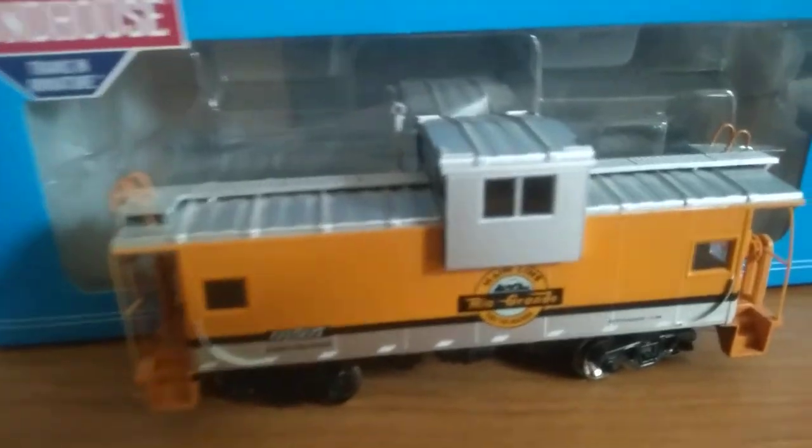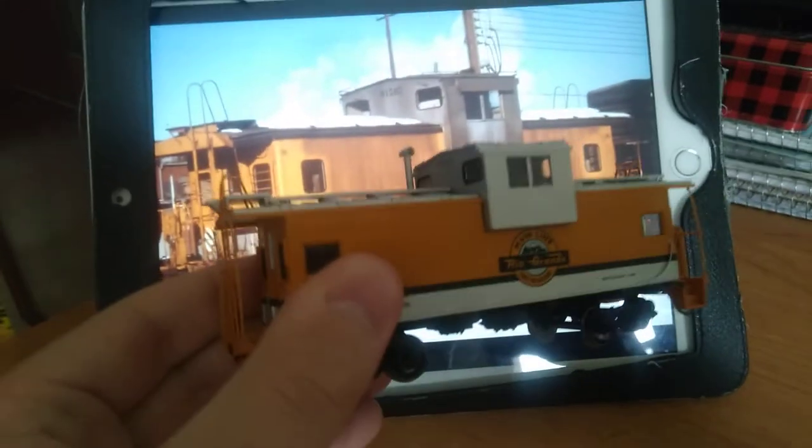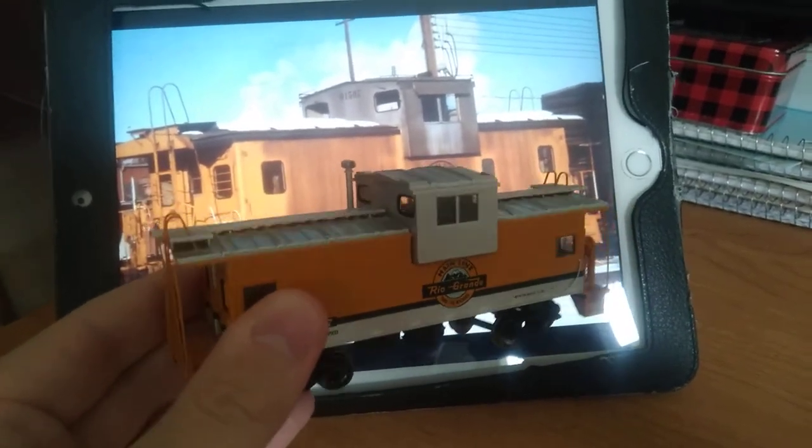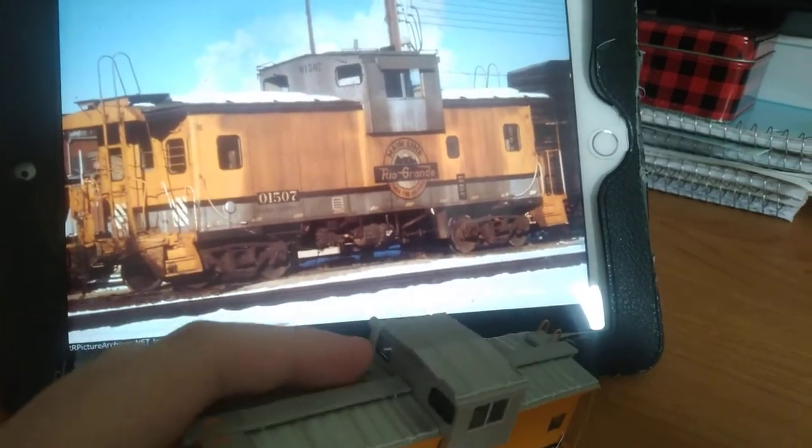For one, the real 01507 had a black roof in comparison with the silver roof that this one had. For another thing, the real 01507 didn't have this chimney.